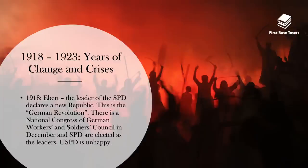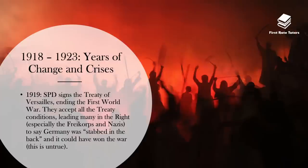The more extreme leftist group, the USPD, were really unhappy with this outcome and this essentially created a bit of a fracture on the left in Germany between the SPD, who were the more moderate left and who were elected, versus the USPD, who were a little bit more extreme. In 1919, the SPD signed the Treaty of Versailles, which ended the First World War. Do bear in mind that the First World War's official dates are 1914 to 1918; 1919 was essentially just the paperwork which officially declared the end of the First World War, though it technically had ended in 1918.